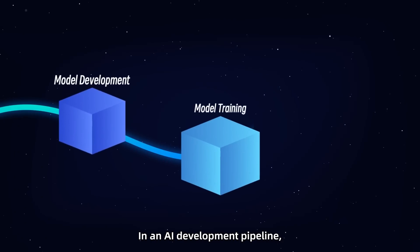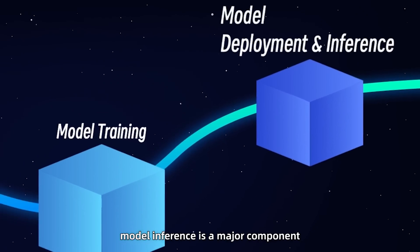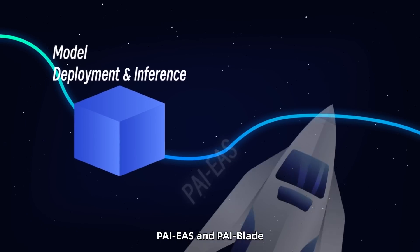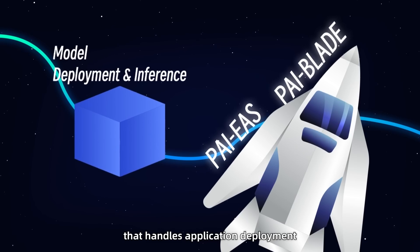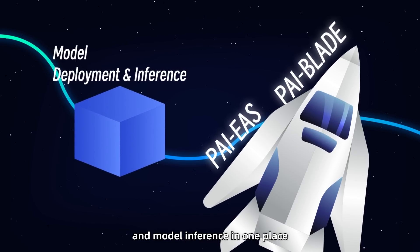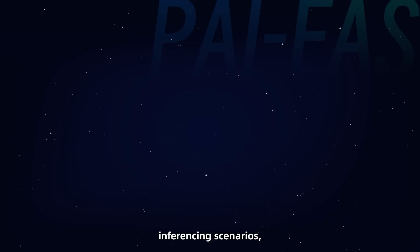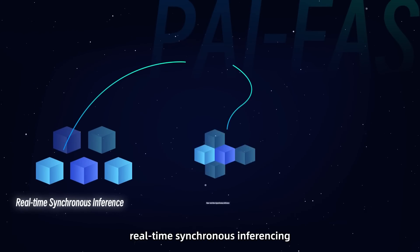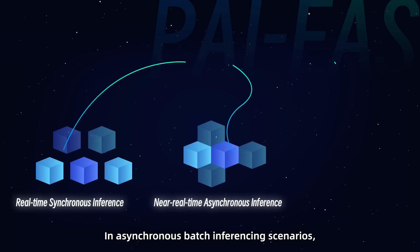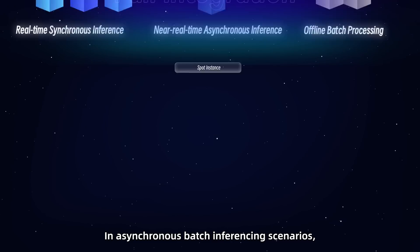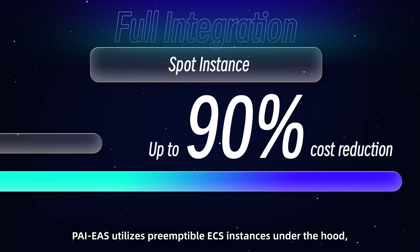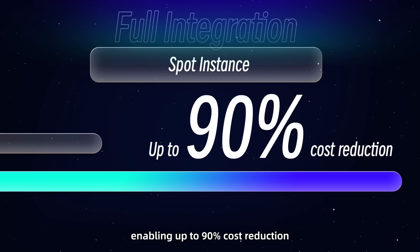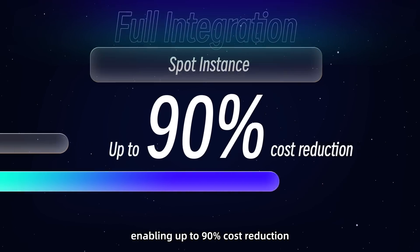In the AI development pipeline, model inference is a major component. PAI EAS and PAI Blade together make up a solution that handles application deployment and model inference in one place. PAI EAS supports many inferencing scenarios, including real-time synchronous and asynchronous batch inferencing. In asynchronous batch inferencing scenarios, PAI EAS utilizes preemptible ECS instances under the hood, enabling up to 90% cost reduction.